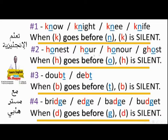Rule number two: honest, hour, owner, ghost. Don't say 'ghost' — when H goes before O, H is silent. Don't say 'honest'. Rule number three: doubt — don't say 'doubt'; debt — don't say 'debt'. B is silent when it goes before T, so we say 'debt', 'doubt'.